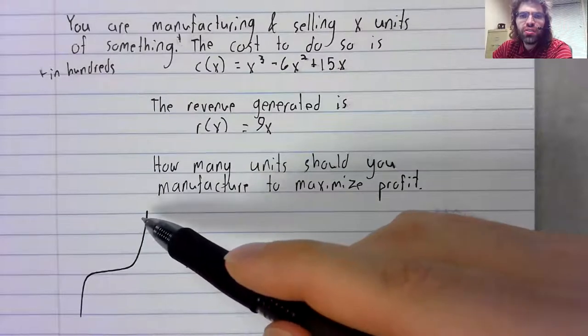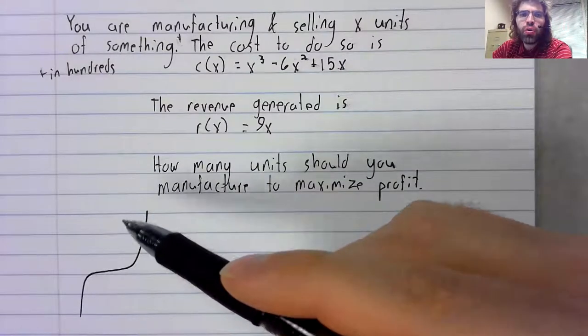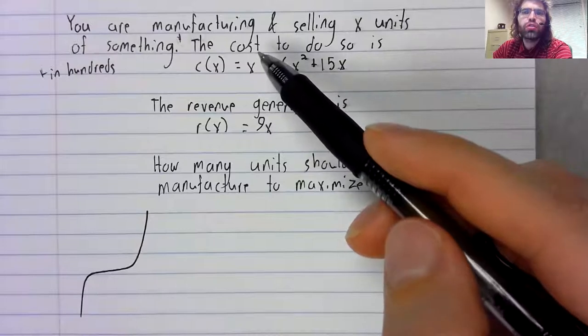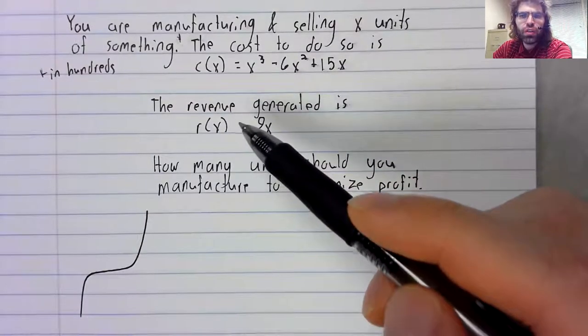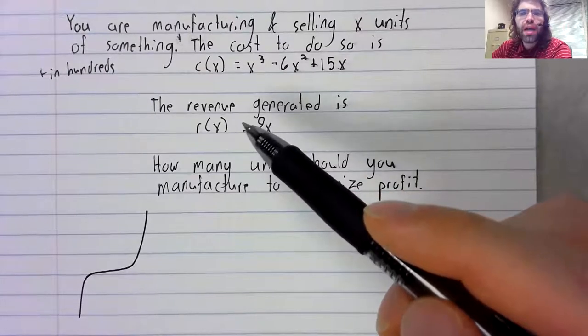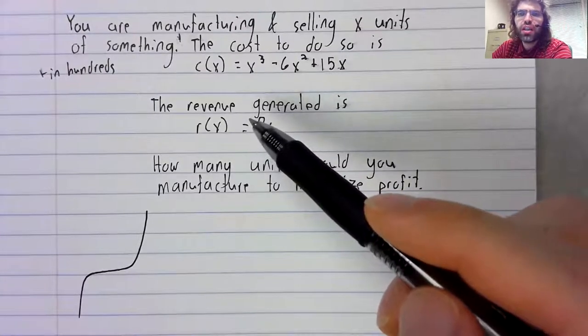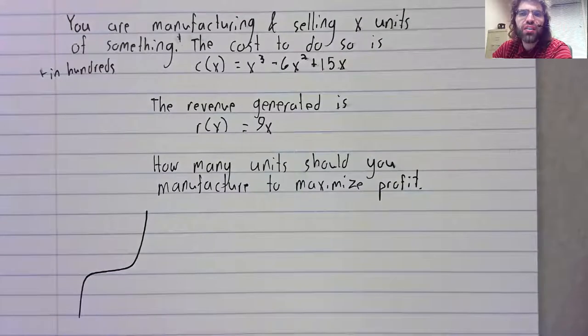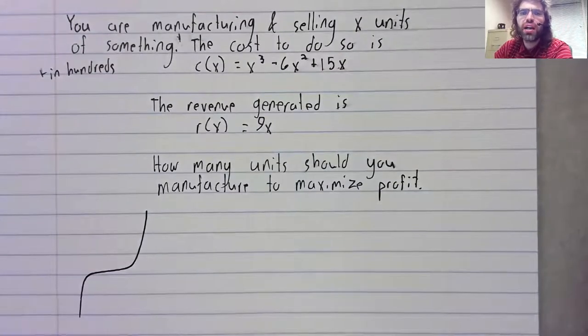And because of diseconomy of scale, cost tends to grow quicker than revenue after a while. And just manufacturing and selling as many units as possible might not be the best idea.